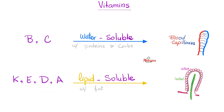Let's talk about vitamins. We have water-soluble vitamins such as vitamin B and vitamin C — they go with water-soluble micromolecules (proteins and carbs) into the blood. But fat-soluble vitamins — vitamin K, E, D, and A — are lipid-soluble and go with fat into the lymphatic system. There is a mnemonic in Arabic called 'bus-keda,' which means 'look this way' — B and C are water-soluble; K, E, D, A are fat-soluble.